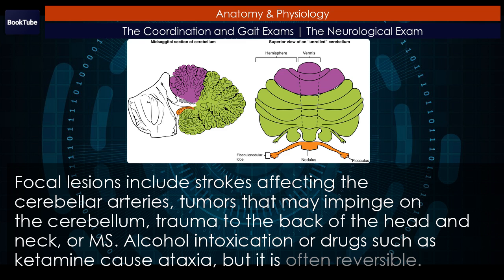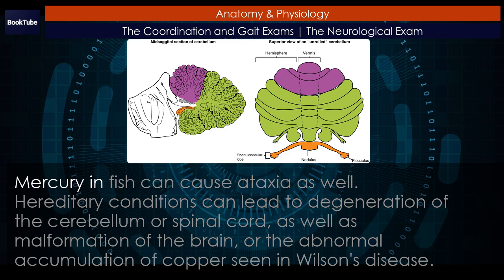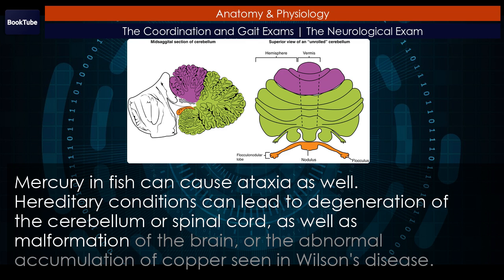Mercury in fish can cause ataxia as well. Hereditary conditions can lead to degeneration of the cerebellum or spinal cord, as well as malformation of the brain, or the abnormal accumulation of copper seen in Wilson's disease.